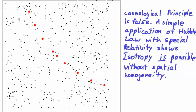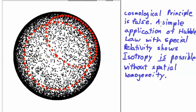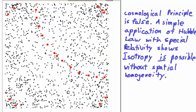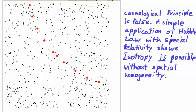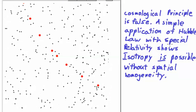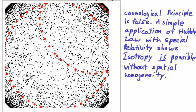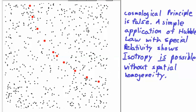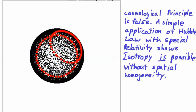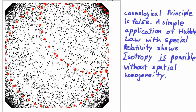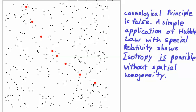So here's my argument in a nutshell, as shown in this animation. The cosmological principle is essentially false. The simple application of Hubble's law, that is that the distance of objects is proportional to the velocity of the objects, along with a little bit of special relativity, shows that isotropy is possible without spatial homogeneity. That is, the universe would look the same in all directions from every point in the universe, but it is not spatially homogeneous, because out here at the edges you would have a higher density. As objects get closer and closer to the speed of light, they bunch up.